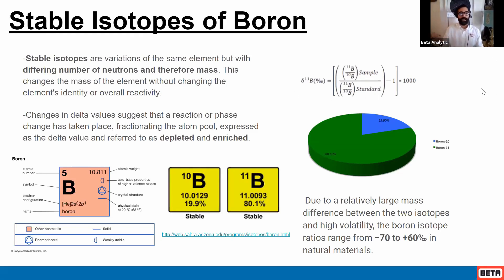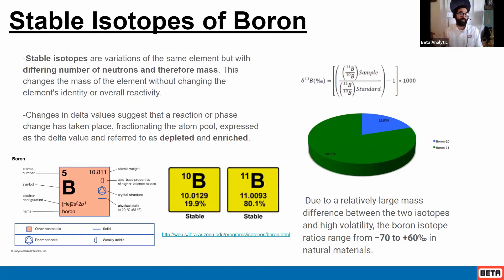What's really interesting about boron is that with the other isotopes we've talked about so far, it's usually about a 99 to maybe 98% difference of the common isotope to the rare isotope, with the rare isotope in some cases being a fraction of a percent of the total abundance of that particular element. When it comes to boron, it's a little different — boron is nearly an 80 to 20% split.